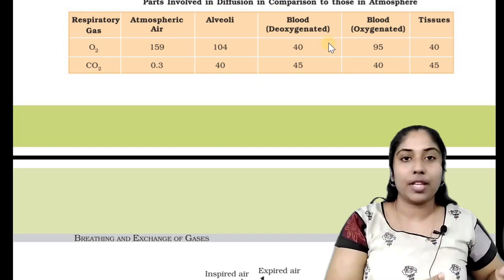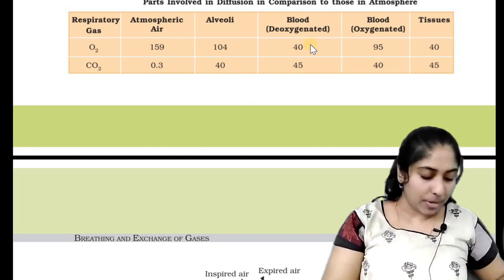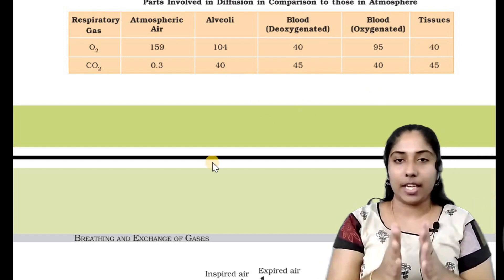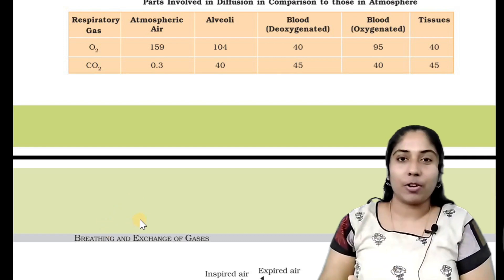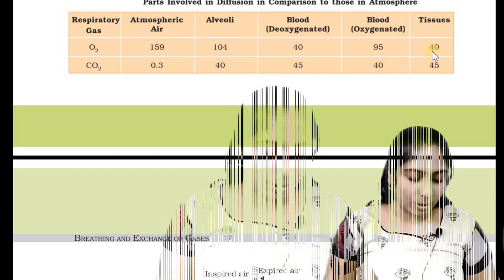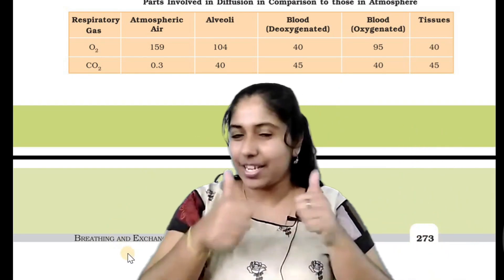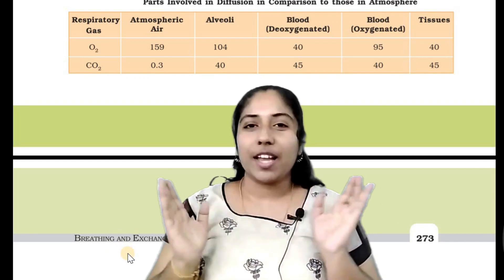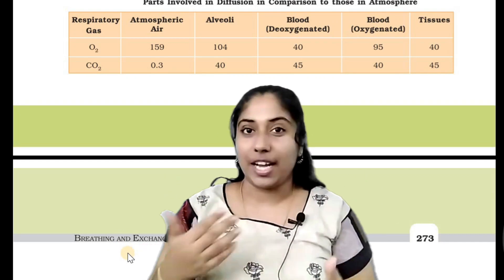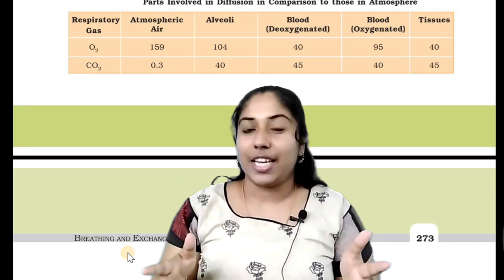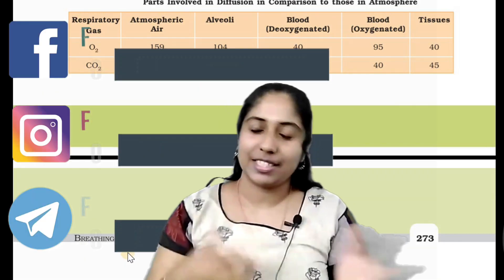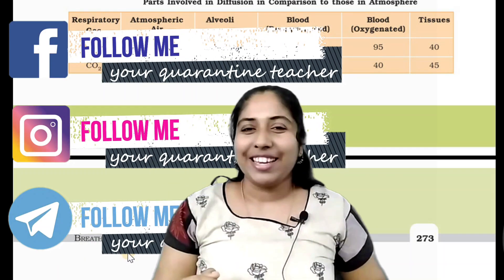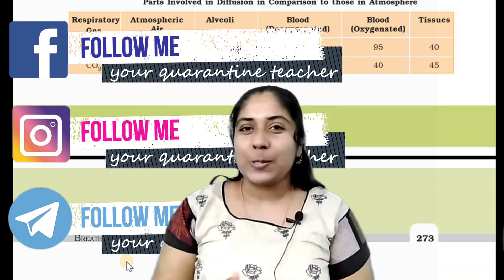That is the alveola in the first column at 40, oxygenated in the second column at 40, tissues in the first column at 40. You have to do that trick with the table. If you have any questions, thank you so much for watching this video.